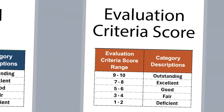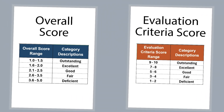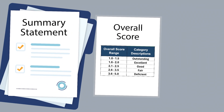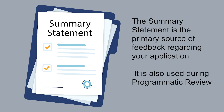Each application is also rated according to the peer review evaluation criteria published in the funding opportunity. The most important peer review criteria receive scores from each reviewer using a scale of one to ten, where one represents the lowest merit and ten the highest merit, using whole numbers only. Additional review criteria are not individually scored but are discussed by the panel and may impact the overall score. The summary statement not only provides the primary source of feedback you will receive regarding your application, but it is also used during the second tier of review, programmatic review.